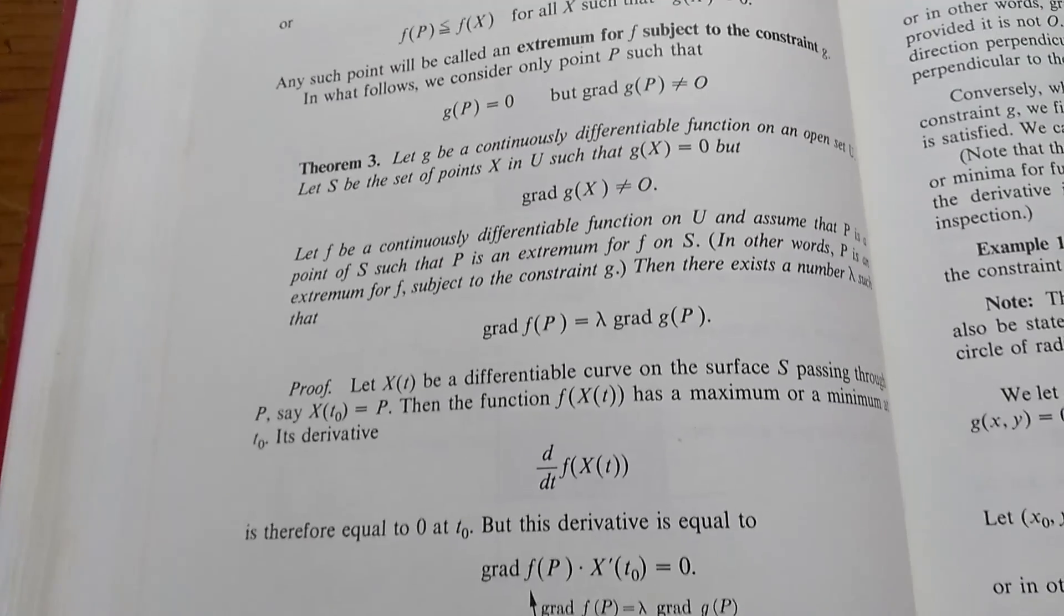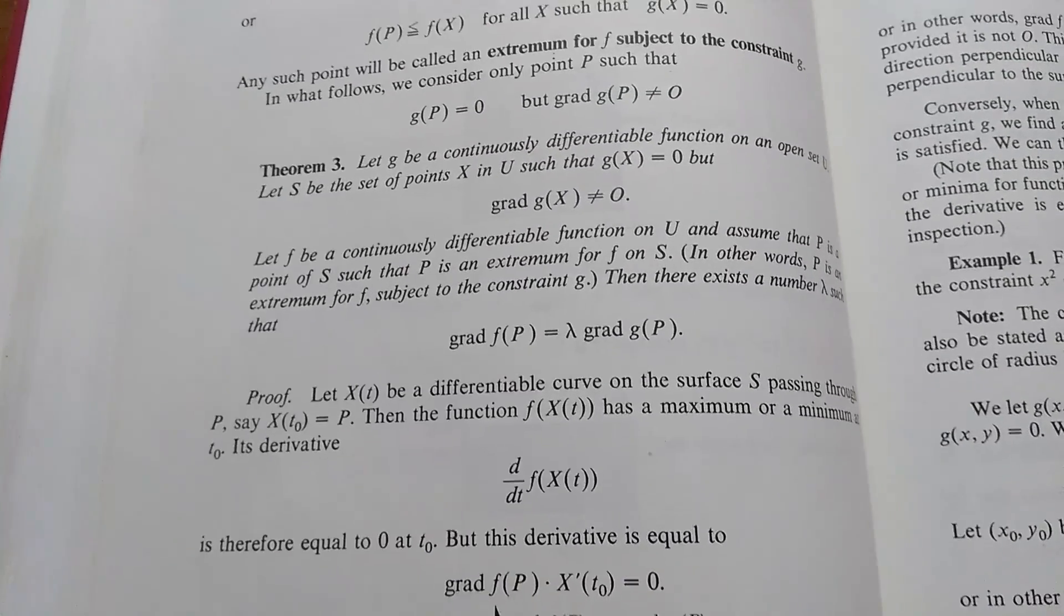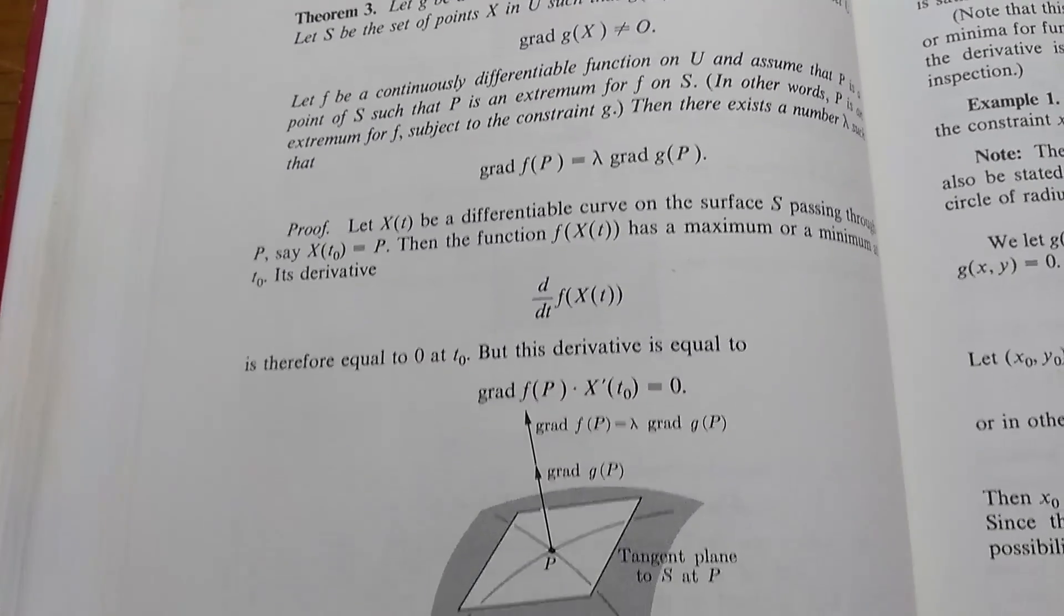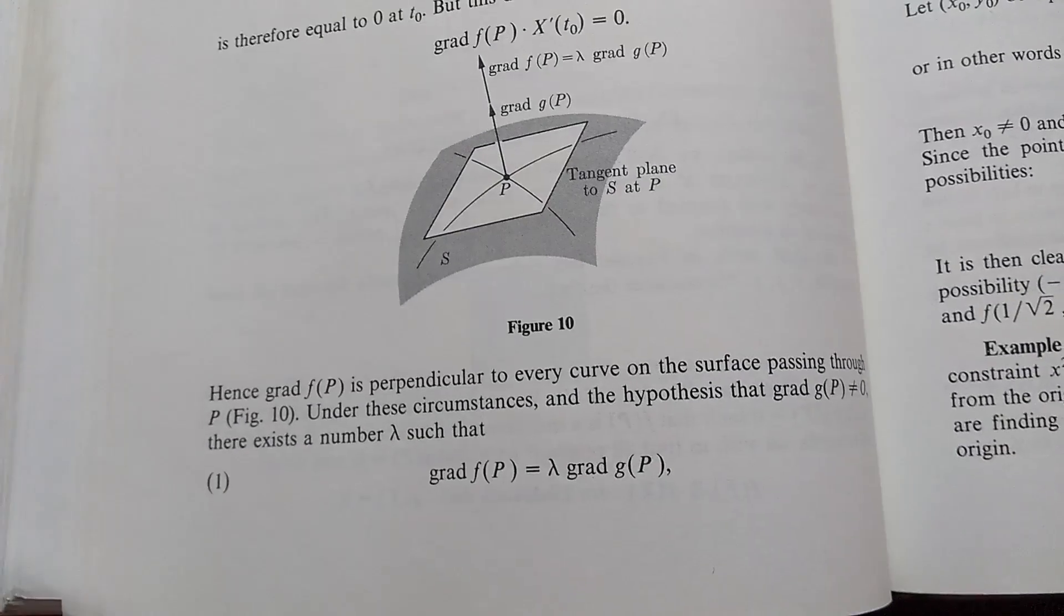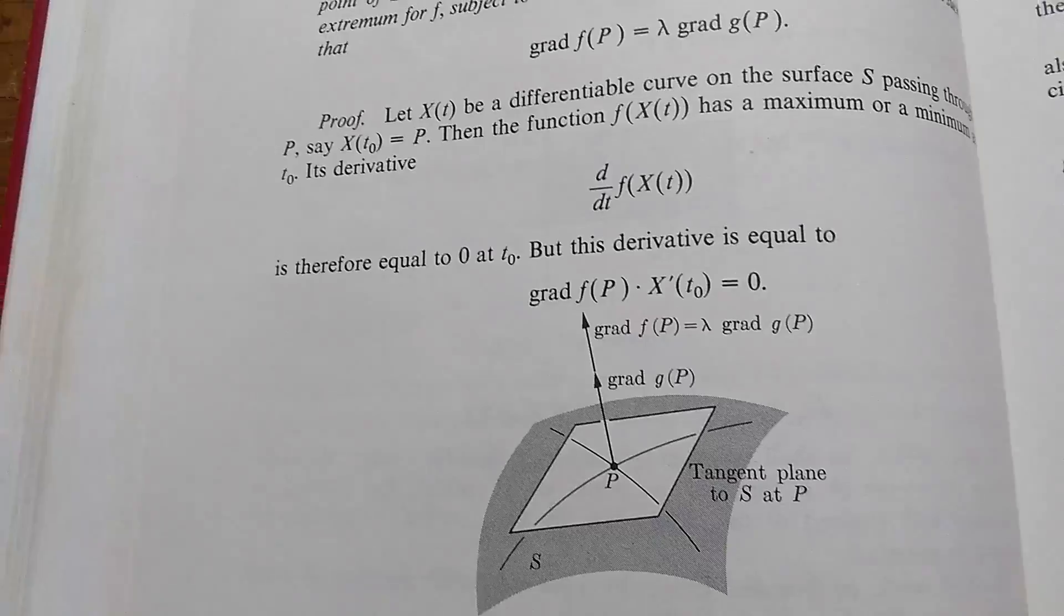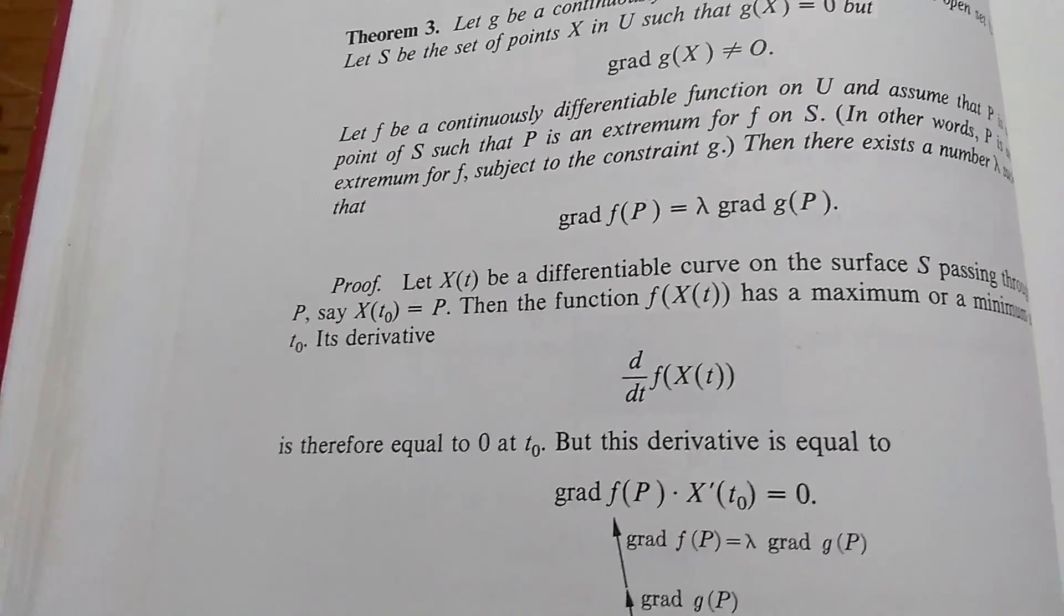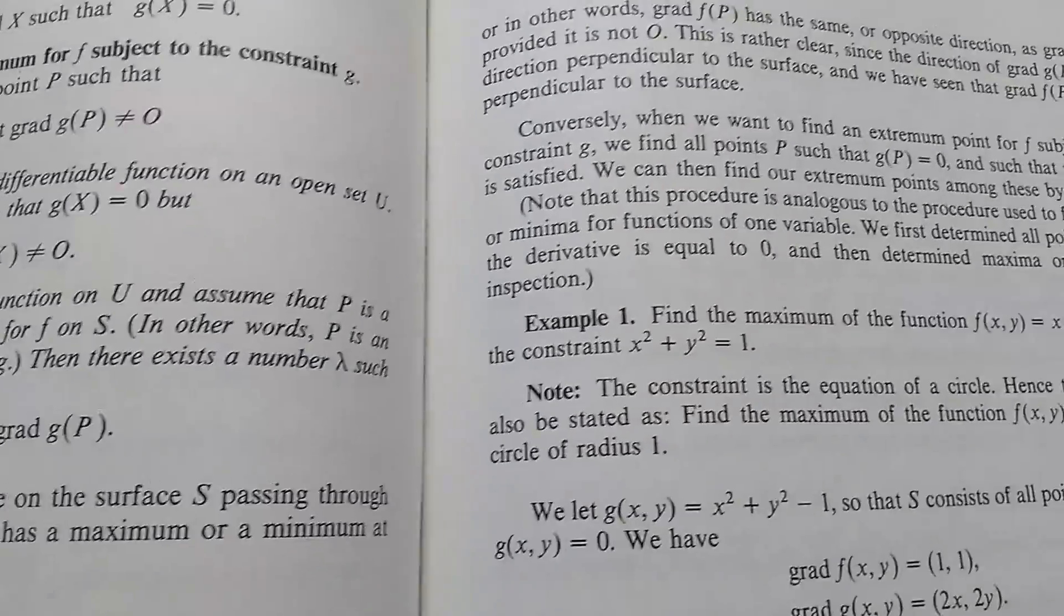This is the section on Lagrange multipliers, and this is where Lang explains why the formula for Lagrange multipliers actually holds, right? Lang does a really good job explaining that. Again, Lang is a great author, and this is a fantastic book.